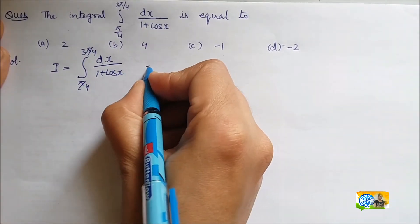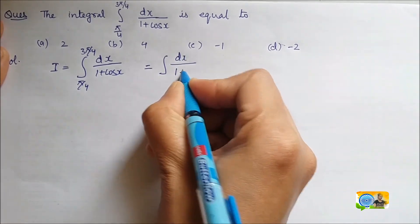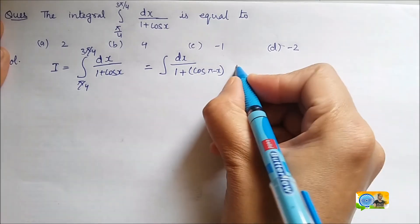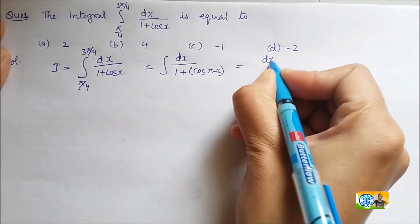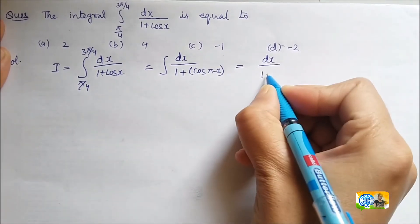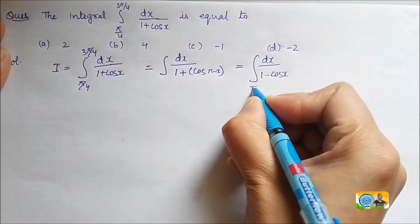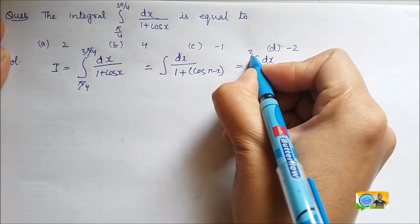This integral can be written as dx 1 plus cos of pi minus x. Or, I can write this as dx upon 1 plus this will be minus of cos x. So, minus of cos x between the limits pi by 4 to 3 pi by 4.